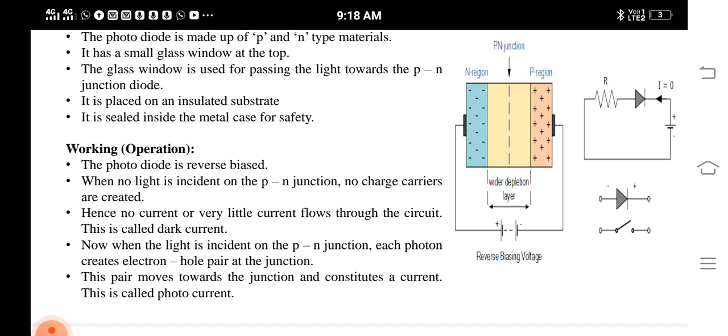Now, when light is incident on the PN junction, each photon creates an electron-hole pair at the junction. This pair moves towards the junction and constitutes a current. This is called photocurrent.